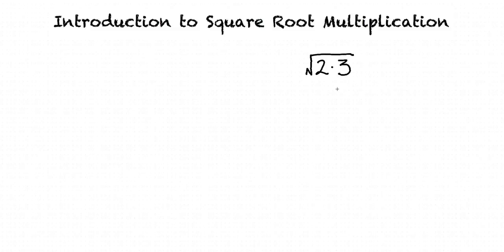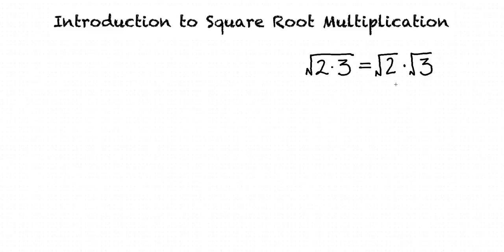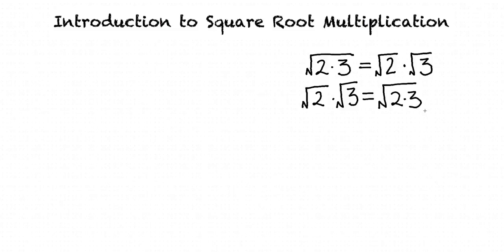For example, the square root of 2 times 3 can be rewritten as the square root of 2 times the square root of 3. The same is true in reverse — if we started with two separate square roots multiplied, such as the square root of 2 times the square root of 3, we could combine that into a single square root and write it as the square root of 6. These two properties are very useful when simplifying more complex square root problems.